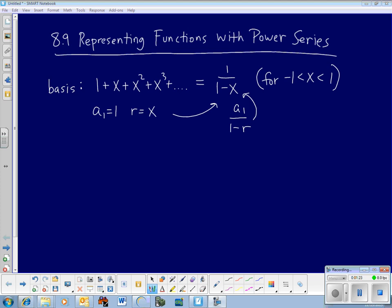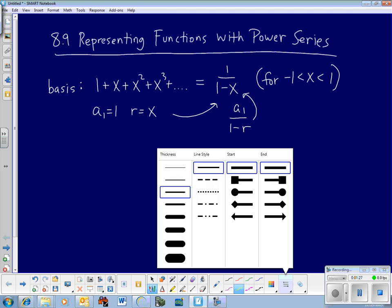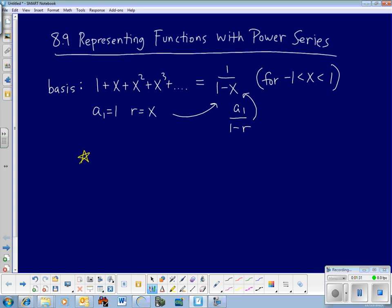So what we're going to try to do is take these functions that we're given and make them look like 1 over 1 minus x. If we can get it into the form of the sum of a geometric series, then we should be able to express it as a series. So here's our double-starred statement of the day. Take the function, make it look like a₁ over 1 minus r.